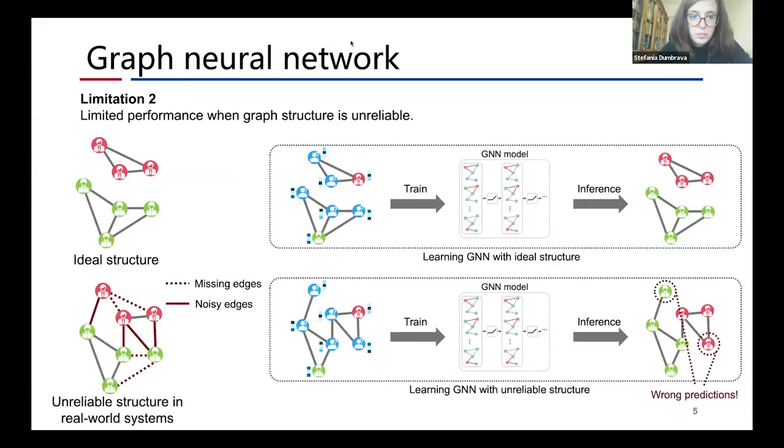The second issue is the limited performance of GNN when graph structure is unreliable. The graph structure from real-world systems is usually imperfect, missing some significant connections or containing noise edges. When GNN learns from such unreliable structure, it sometimes makes wrong predictions, as the toy example shown.